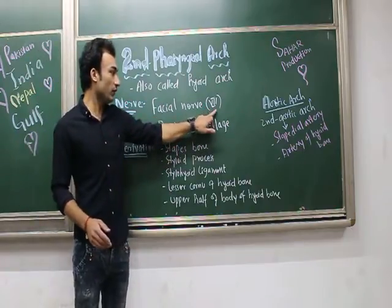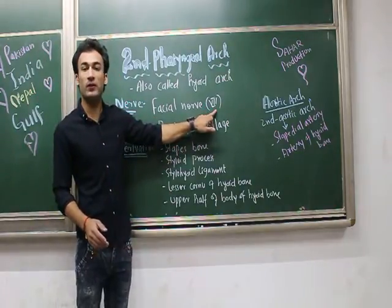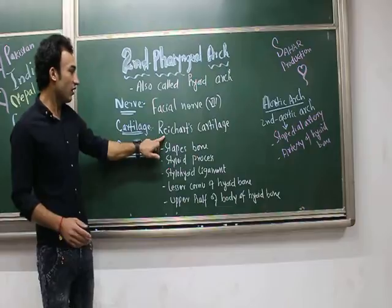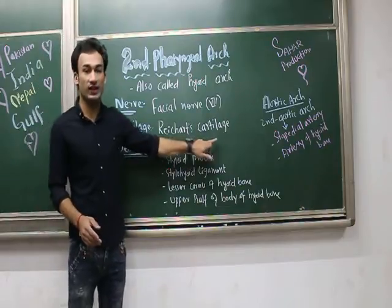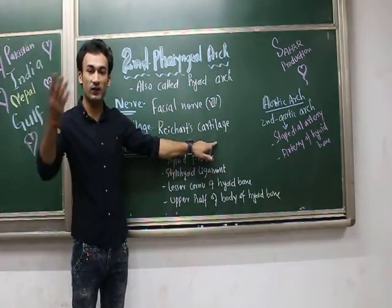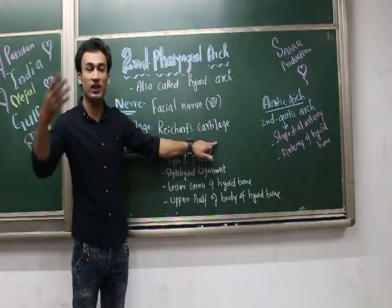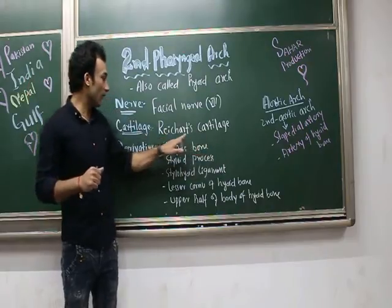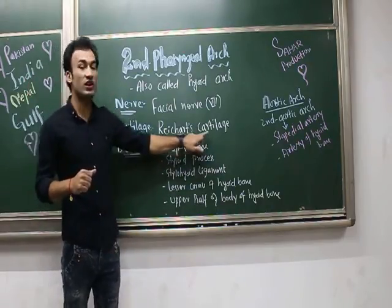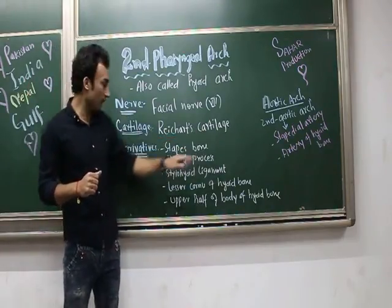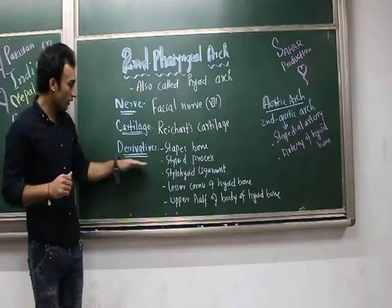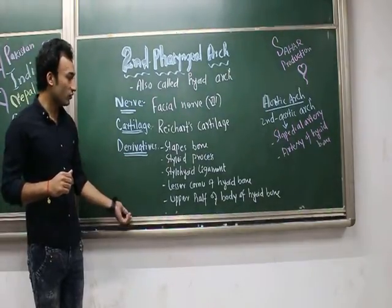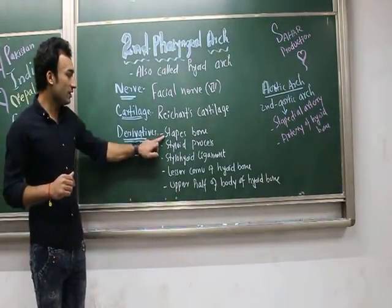The nerve for the second pharyngeal arch is the facial nerve, which is cranial nerve number seven. The cartilage of the second pharyngeal arch is called Reichert's cartilage. Remember that for the first pharyngeal arch, the cartilage was Meckel's cartilage.